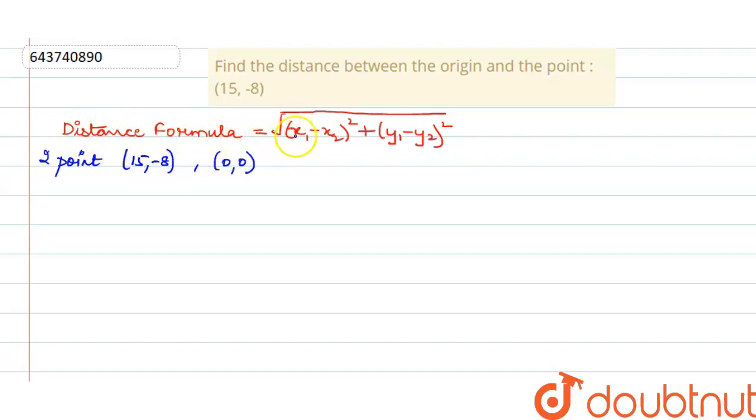So from here we can see that distance formula is given by square root of x1 minus x2 whole square plus y1 minus y2 whole square. So what we will do is we will simply put the points in this formula.